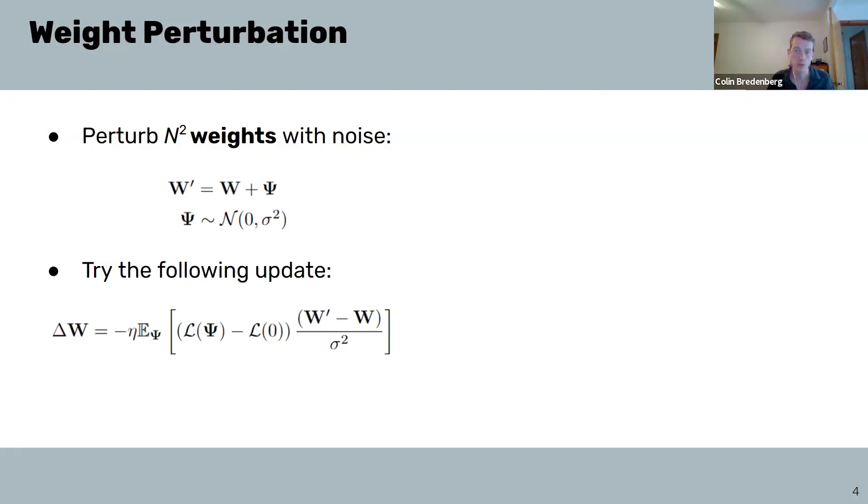More concretely, our parameter update delta W is given by this function, where eta is our learning rate, and we can estimate this expectation as an empirical average over noise samples psi k, like so.